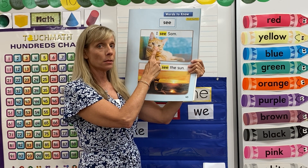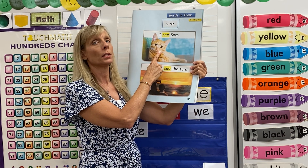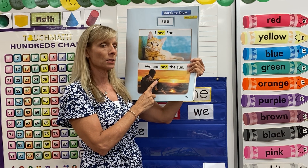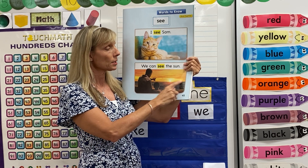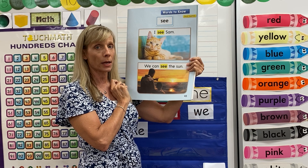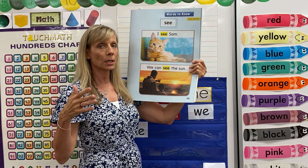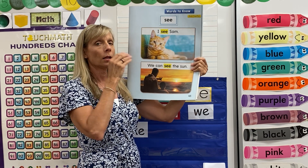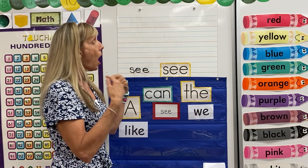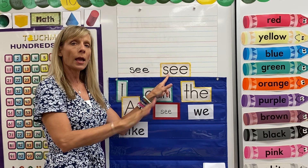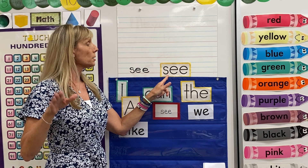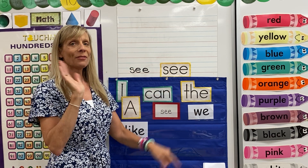Are we using our eyes to see Sam? Yes. Are we using our eyes to see the sun or the sunset? Yes. So whenever we use our eyes, we use the word 'see' — S-E-E. Let's sing it one more time before we go, friends. I can spell 'see' — S-E-E. All you need is an S-E-E. Bye, friends!